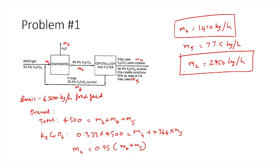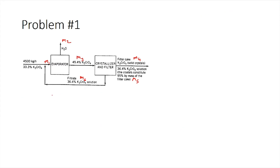The next thing to calculate is the recycle stream and the feed rate to the crystallizer. These values cannot be obtained from the overall system alone, so we choose a smaller system. Using the crystallizer and filter as the system, we write the total mass balance: M3 = M4 + M5 + M6, where M3 is the feed entering and M4, M5, M6 are the streams leaving.